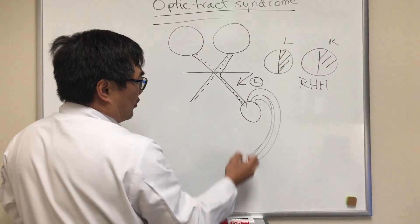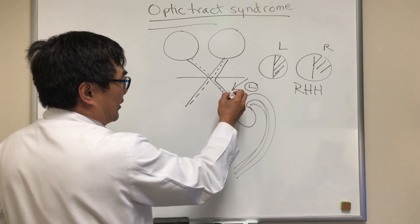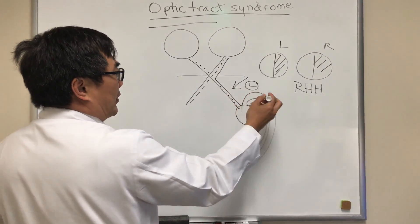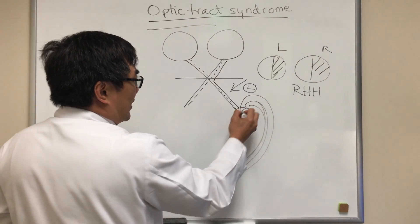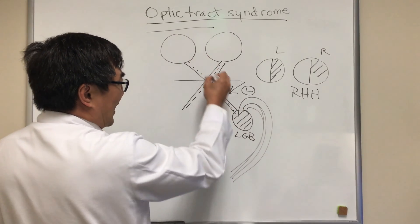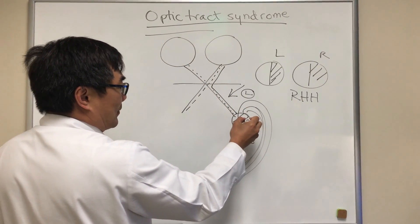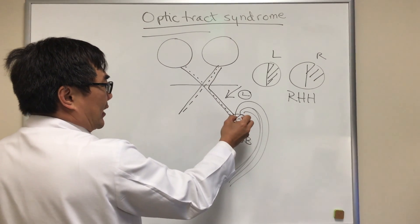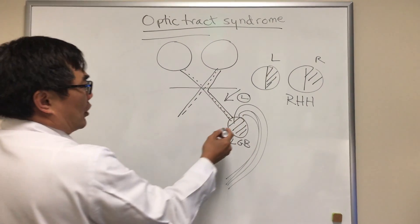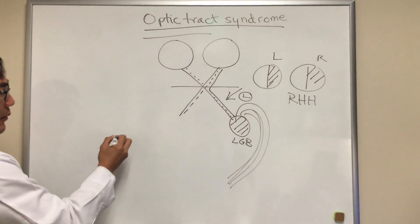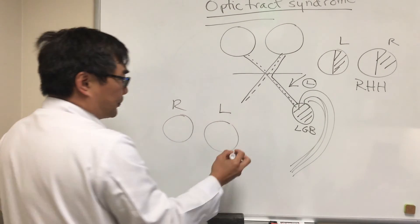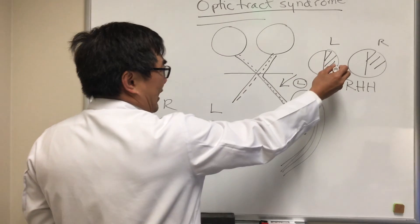What we're trying to do with the optic tract syndrome is figure out: are we in the radiations, the cortex, the geniculate body, or the optic tract? The two features that help us determine whether we are in the tract — number one: because the lateral geniculate body is where the axon is heading to synapse, any lesion in front of the geniculate body will cause optic atrophy. The special form of optic atrophy we're looking for in patients with optic tract lesions is correlated to the homonymous hemianopsia.